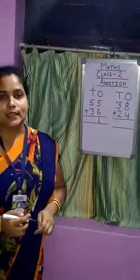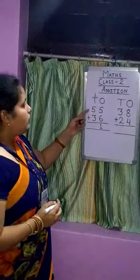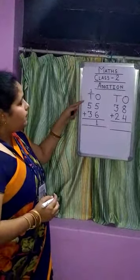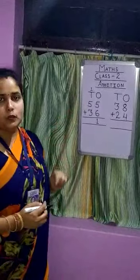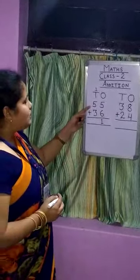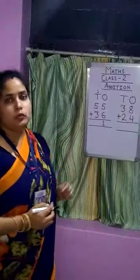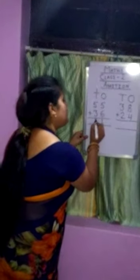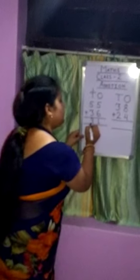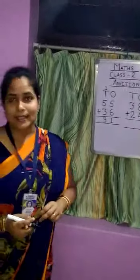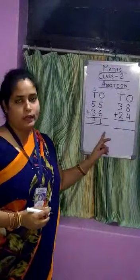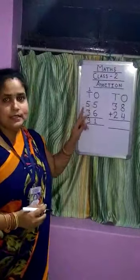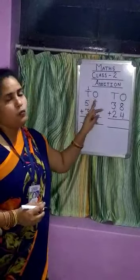Now we will do addition in the tens place. 1 plus 5 equals 6, and 6 plus 3 equals 9. So we will write 9 here. Our answer is 91. 91 means 9 tens and 1 one.